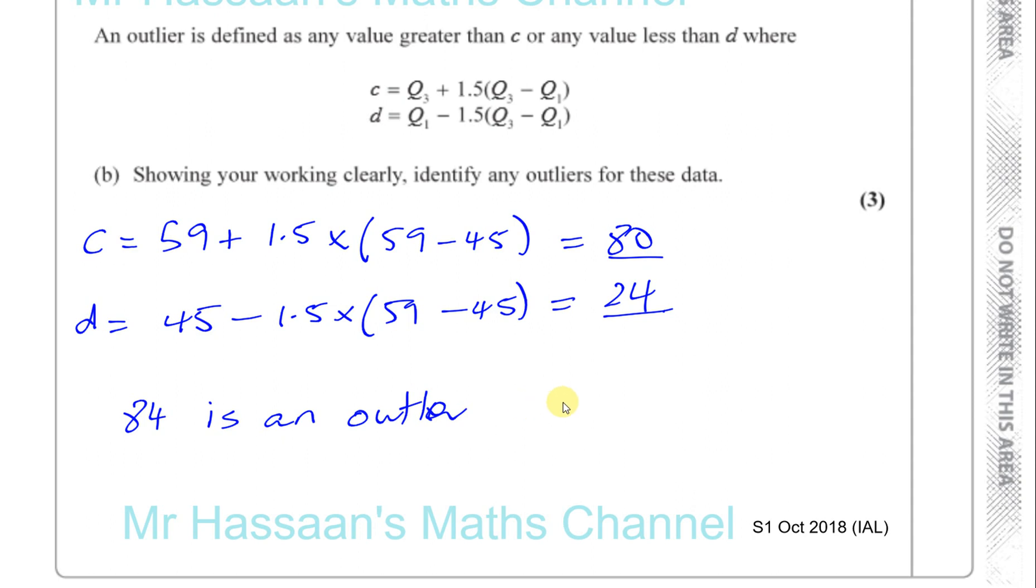This is outside our limit. So therefore, you can say 84 is an outlier. Outlier, because 84 is greater than C. Okay, it's bigger than the upper limit. Okay, so that's how we identified the outliers.